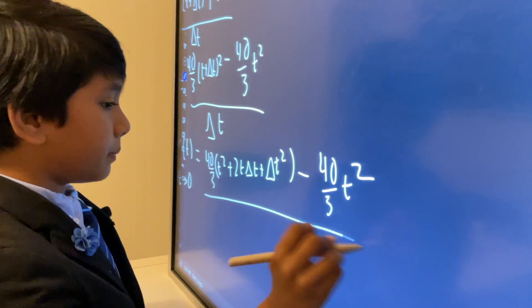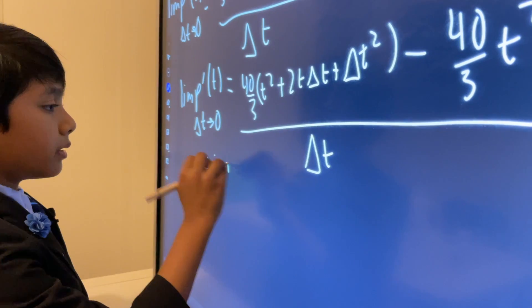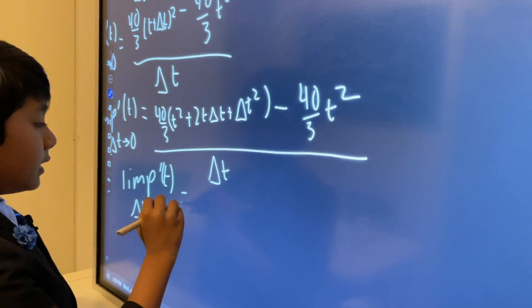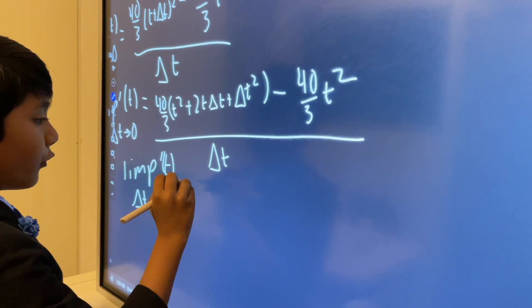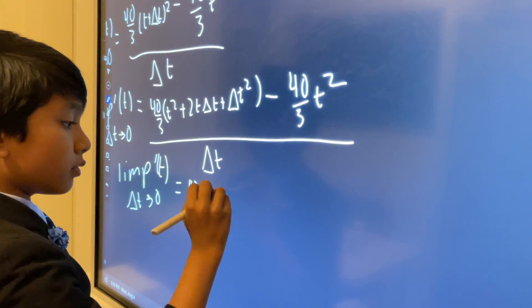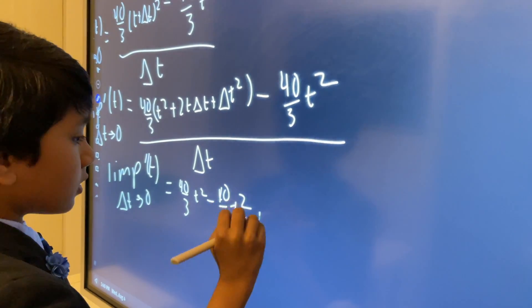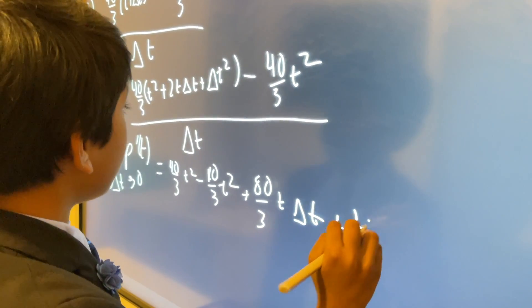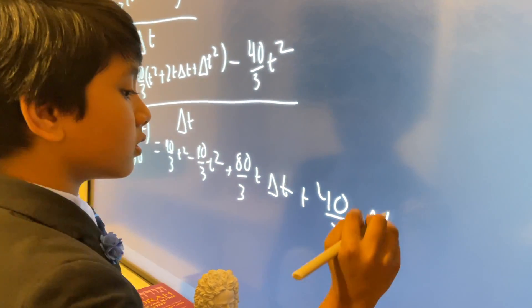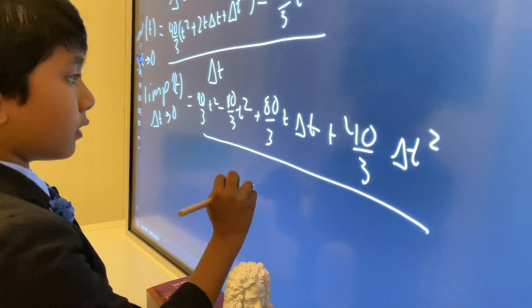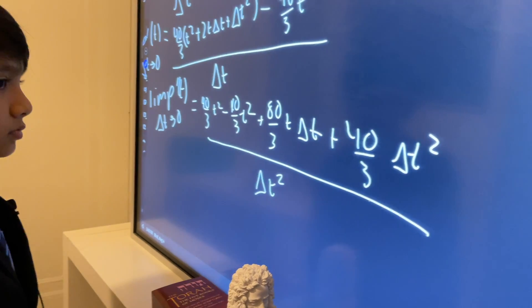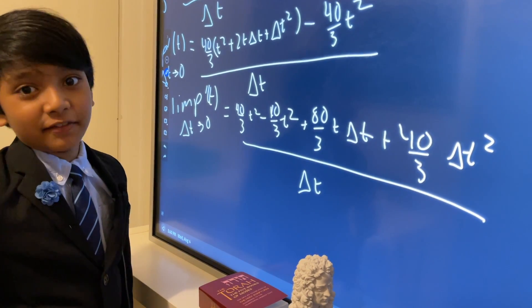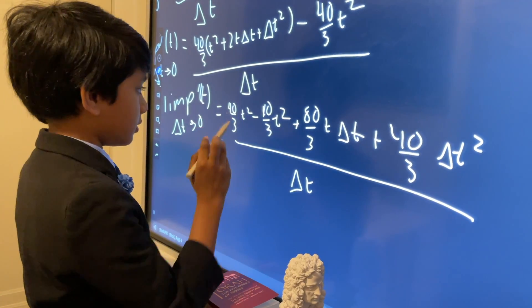So, what I'll do is now I'll go to limit p prime of t divided by delta t. Limit is p prime of t as delta t goes to 0. So, that's going to be equal to 40 over 3 times t squared minus 40 over 3 t squared, and then, plus 80 over 3 t delta t plus 40 over 3 delta t squared. So, we have the entire cast over here, so let's cancel these out.